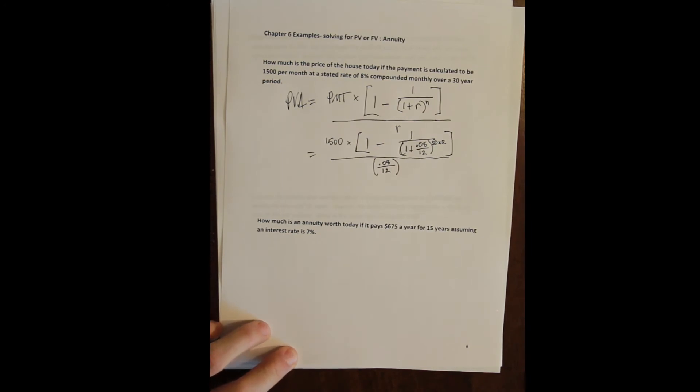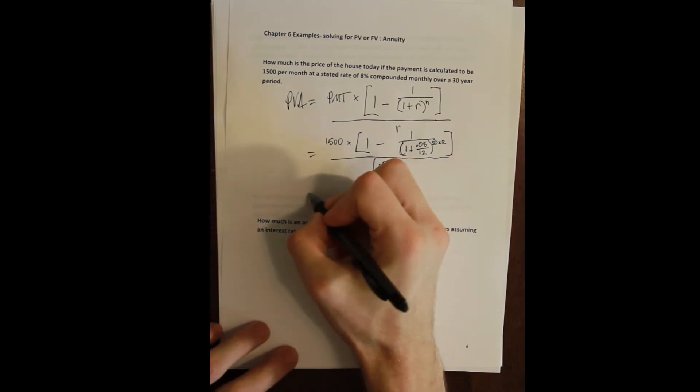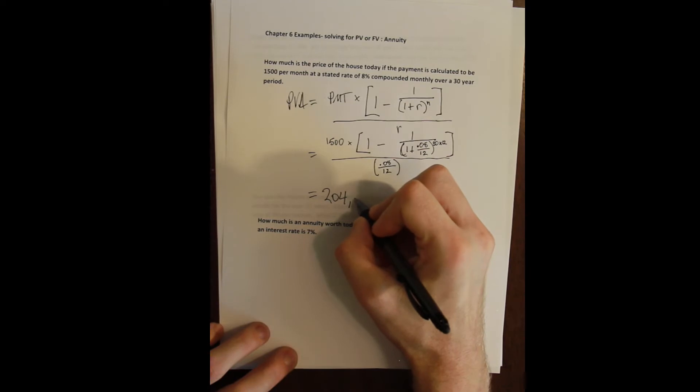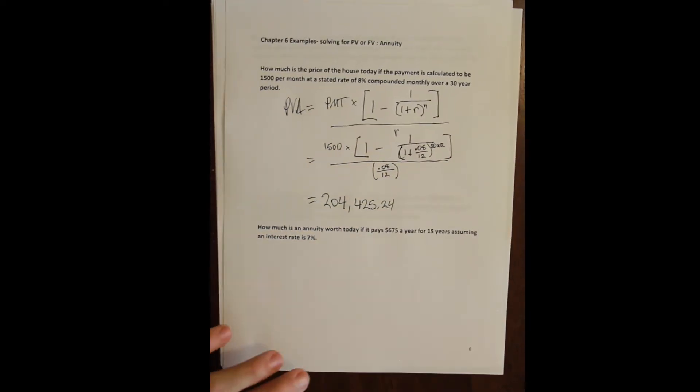Now there's a lot of algebra to do there. As long as we get our algebra correctly, we will have solved the problem. And the house, the present value of the house based on this mortgage payment is $204,425.24.